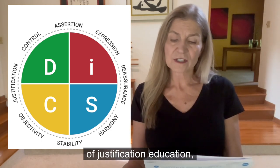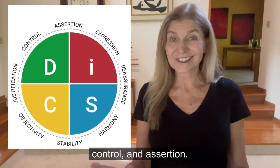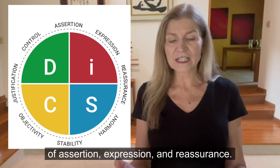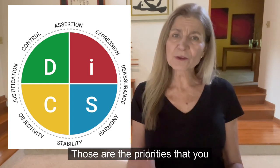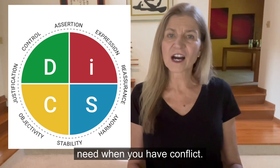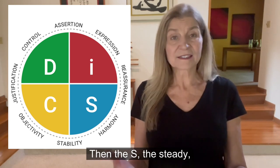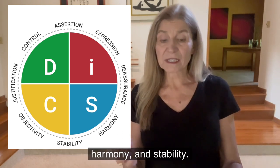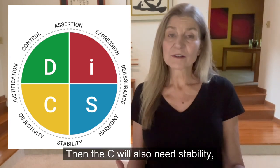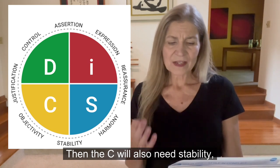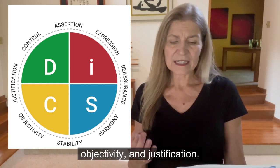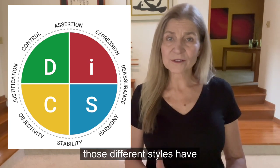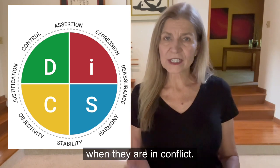The D is going to be a combination of justification, control, and assertion. The I is going to be a combination of assertion, expression, and reassurance — those are the priorities needed in conflict. The S, the steady, needs reassurance, harmony, and stability. And the C will also need stability, objectivity, and justification. Those are the needs and priorities these different styles have when they are in conflict.